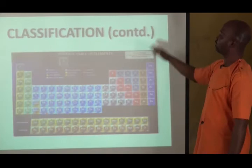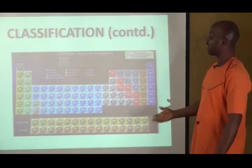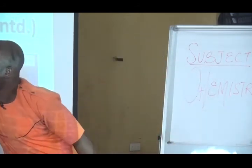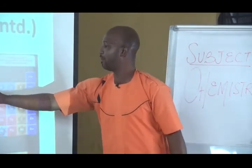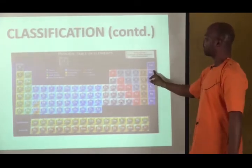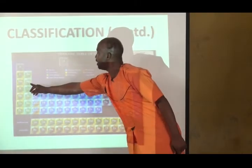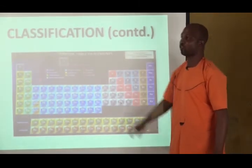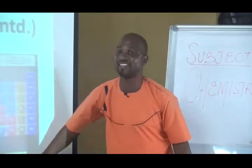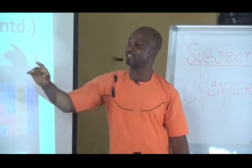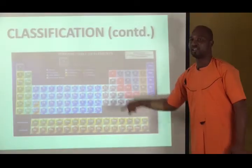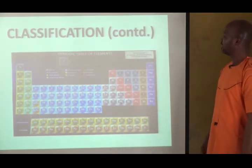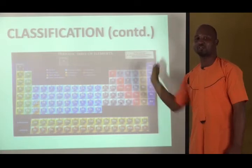The periodic table can be further classified: S-block elements are groups 1 and 2; P-block elements are groups 3 to 8; D-block elements are in between the S-block and P-block; and the F-block elements are listed below. So you have S, P, D, and F. S stands for sharp, P stands for principal, D stands for diffuse, and F stands for fundamental.